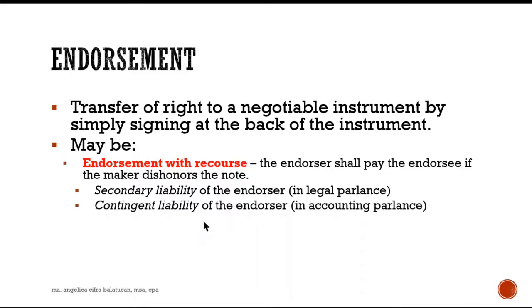In accounting parlance, discounting with recourse means the endorser has a secondary liability — specifically, it is treated as a contingent liability in accounting.